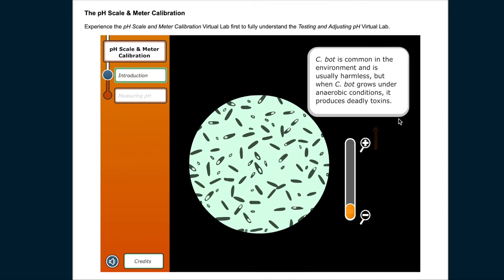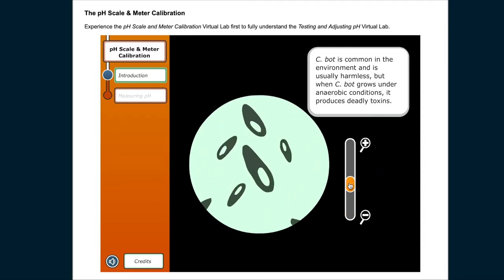C. bot is common in the environment and is usually harmless. But when C. bot grows under anaerobic conditions, it produces deadly toxins.